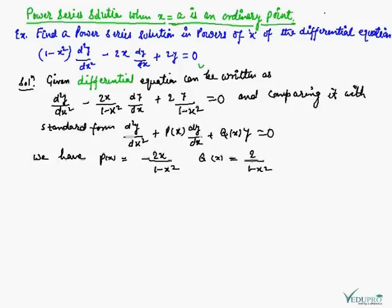The given differential equation is (1 - x²)d²y/dx² - 2x dy/dx + 2y = 0. First, we will write this in standard form: d²y/dx² - [2x/(1 - x²)] dy/dx + [2/(1 - x²)]y = 0. Comparing with the standard form d²y/dx² + P(x) dy/dx + Q(x)y = 0, we get P(x) = -2x/(1 - x²) and Q(x) = 2/(1 - x²).